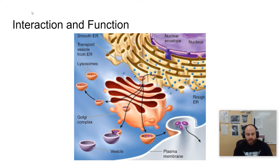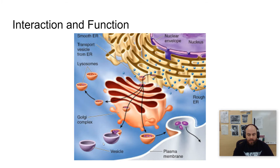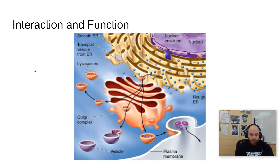A little bit about the ER: it serves several functions. Intracellular transport is one of those functions — it works together with the Golgi. In the rough ER, proteins are made because the ribosomes are there. They're folded up in the ER and then transferred to the Golgi via a vesicle, which is just a temporary storage sac that can travel in the cell. The Golgi modifies that protein and then ships it out into the external environment.